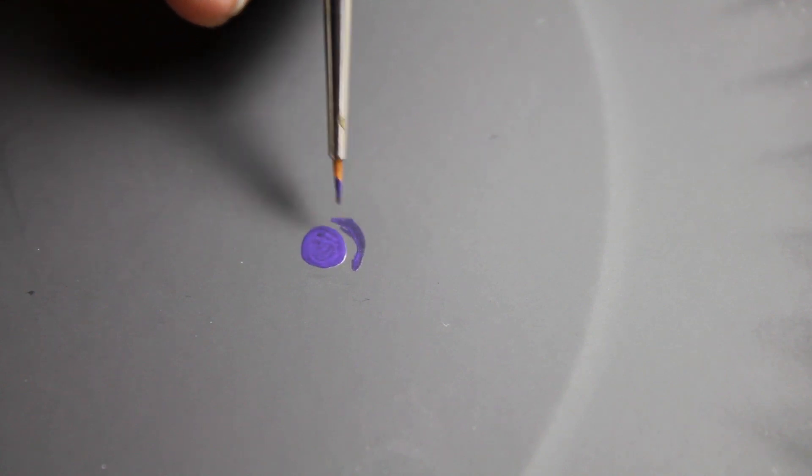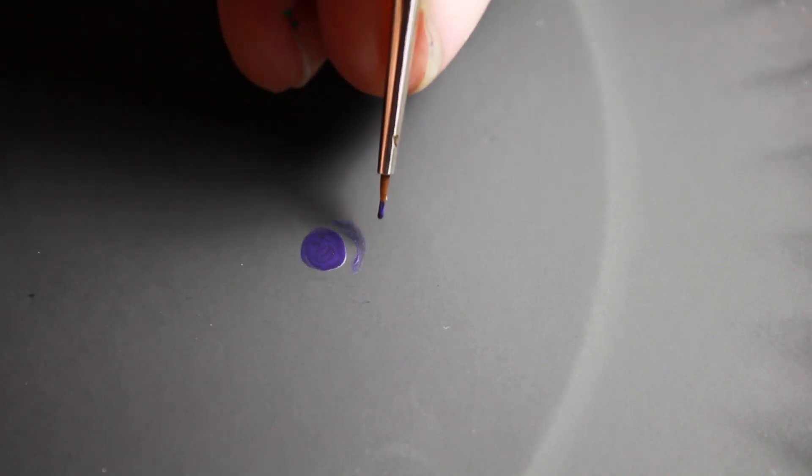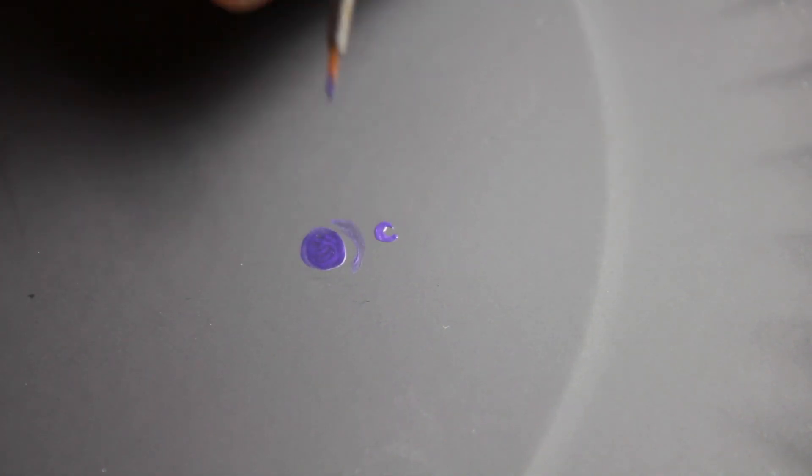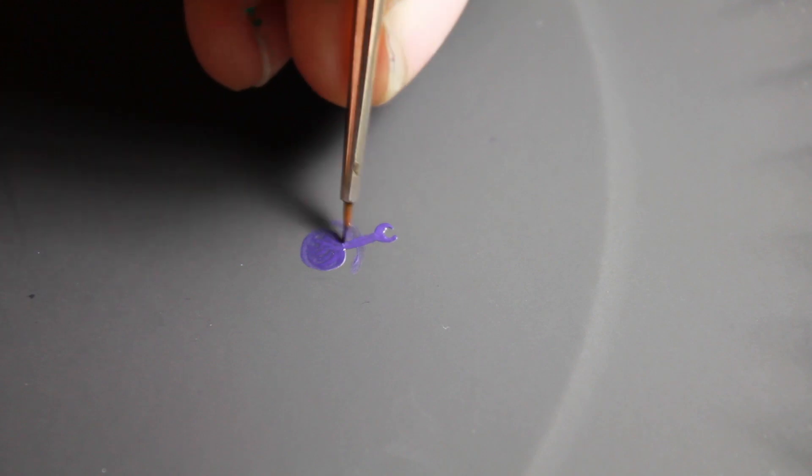The first thing I did was I painted the basic shape of the symbol with a dark purple, starting with the big dot in the center and then moving on to the two moons and then I connected them.